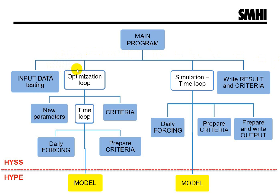Parameter optimization, if that option is chosen, involves several simulations with different parameter values to find the ones that give the minimum value of the objective function. The result will be one or several sets of optimal model parameters. This routine includes calculating new parameter values for the simulation to be tested, running the simulation, and after simulation calculating the value of the objective function to determine the next step — test other parameters or confirm that the optimum is reached.